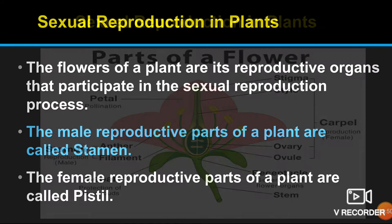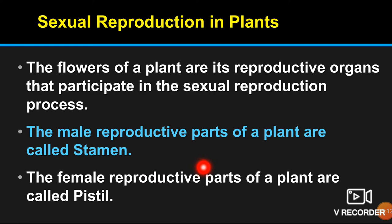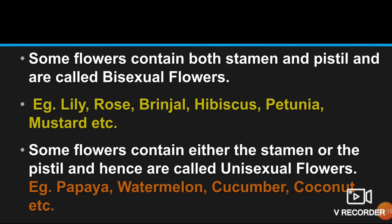Now let's go in detail about what is sexual reproduction. The flower parts are its reproductive organs that participate in the sexual reproduction process. The male reproductive part of a plant is called stamen, and the female reproductive part is called pistil. Some flowers contain both stamen and pistil and are called bisexual flowers. Examples are lily, rose, brinjal, hibiscus, petunia, and mustard.